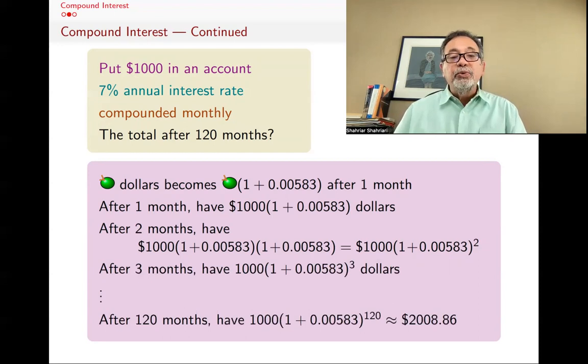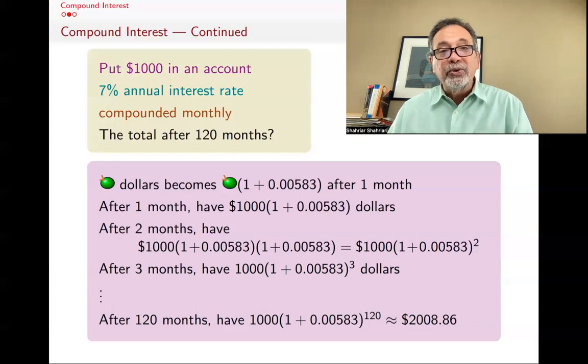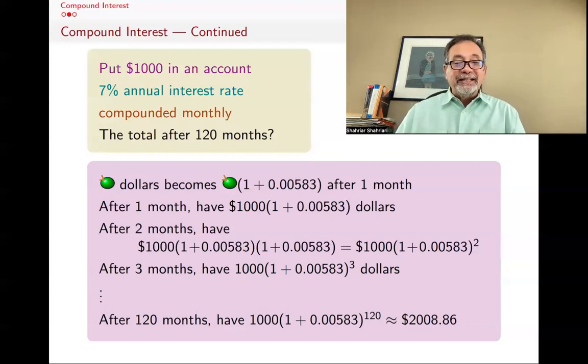And after 120 months, you will have 1,000 times 1 plus 0.00583 to the 120th, which is about $2,008.86.